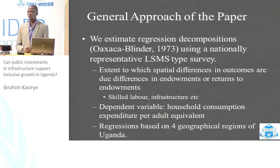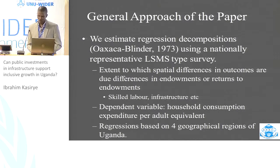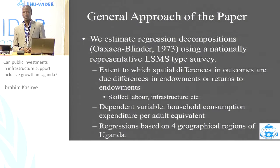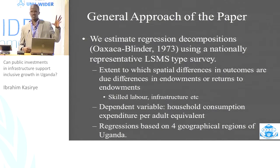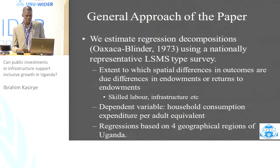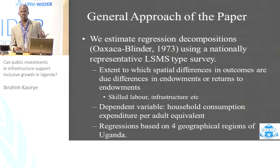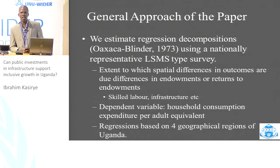We estimate these regressions on the four geographical regions of Uganda, most notably comparing the richest region — the central region — to the other three. In this case, we are trying to see if the poorer regions had either the endowments or returns to endowments similar to what is happening in the central region, and what could be the impact on poverty.